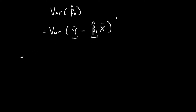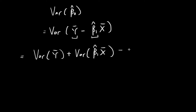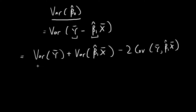For this expression, I can simplify this to: variance of the sample mean of y, plus the variance of β₁̂ times the sample mean of x, and then minus 2 times the covariance between the sample mean of y and β₁̂ times the sample mean of x. This negative sign comes from the negative sign in the original expression. So in order to evaluate the variance, I need to evaluate these three individual components and then add them up.